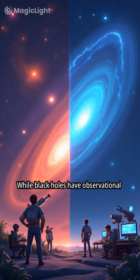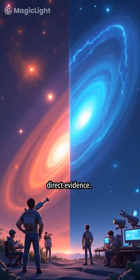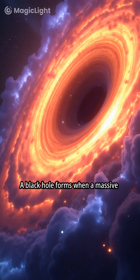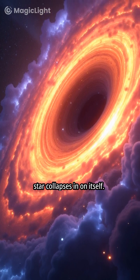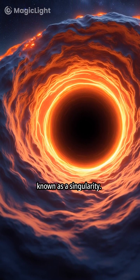While black holes have observational evidence supporting their existence, wormholes remain purely theoretical, with no direct evidence. A black hole forms when a massive star collapses in on itself. The star's matter is compressed into an infinitely small point, known as a singularity.